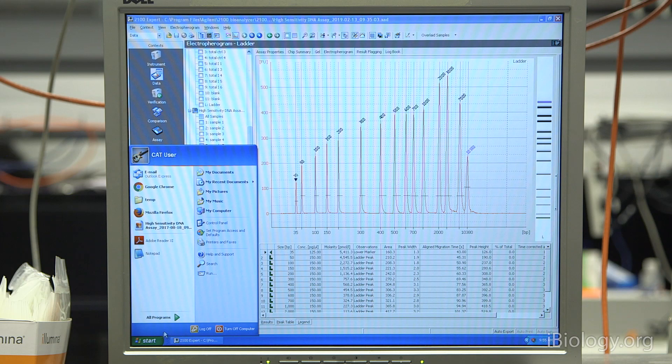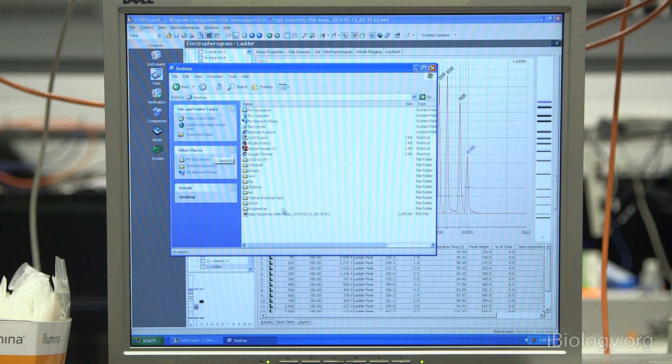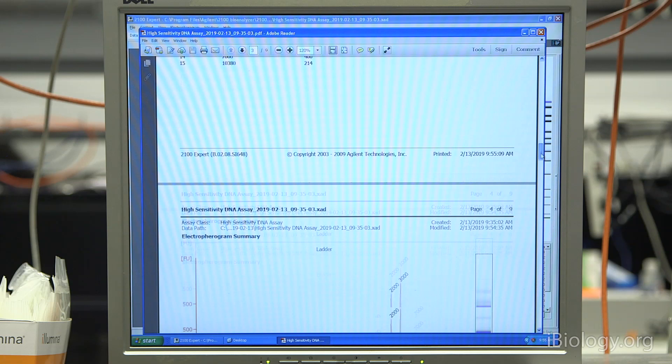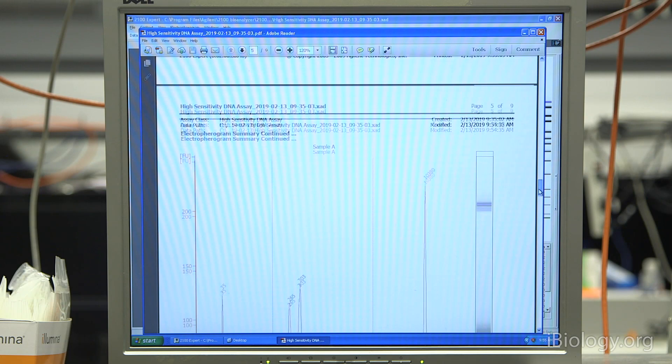If we go to the desktop, we should be able to see our PDF file. And that should be here. If you double click on this, you'll see a summary report on the first page. As you scroll down, you'll see the ladder over here. You want to see nice, tight, sharp bands or peaks on the ladder. Then you'll see the samples.